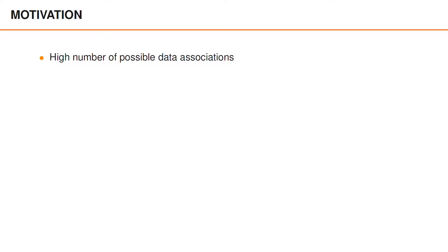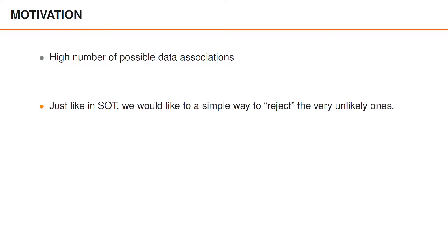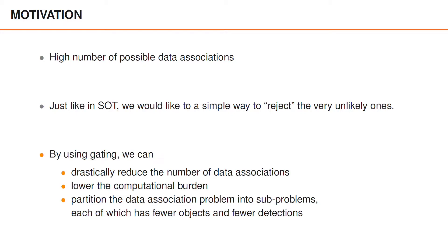We saw earlier that in n-object tracking, we have a very high number of possible data associations. And just like in single object tracking, it would be good if we had a simple way to reject or disregard data associations that are very unlikely — in other words, very improbable. In this video, we will show that by generalizing gating to n objects, we can drastically reduce the number of data associations and lower the computational burden of the tracking algorithm.